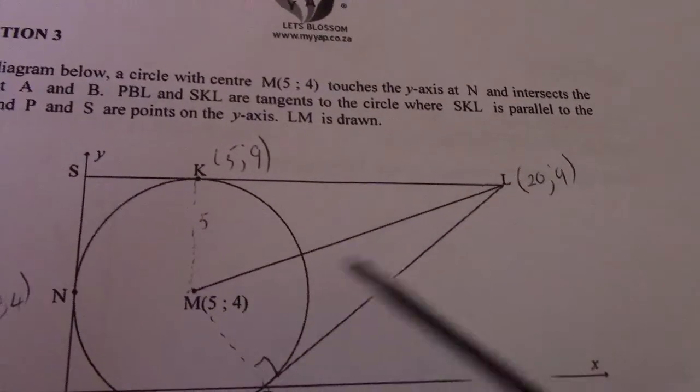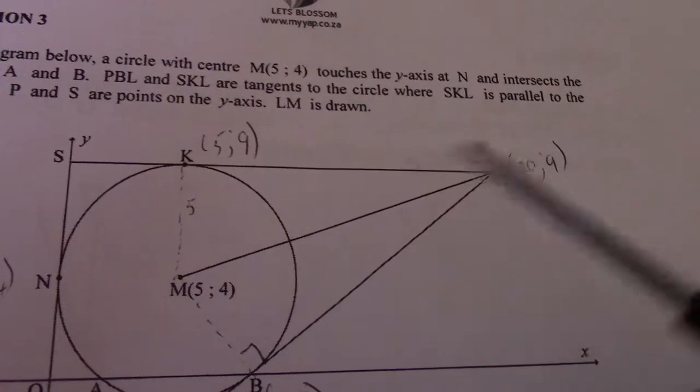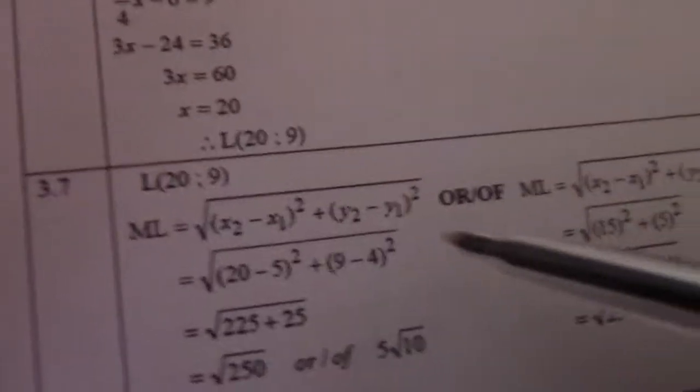So distance formula. I would simply say 20 minus 5 all squared, 9 minus 4 all squared.